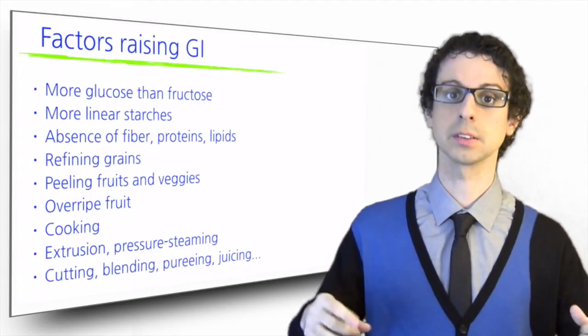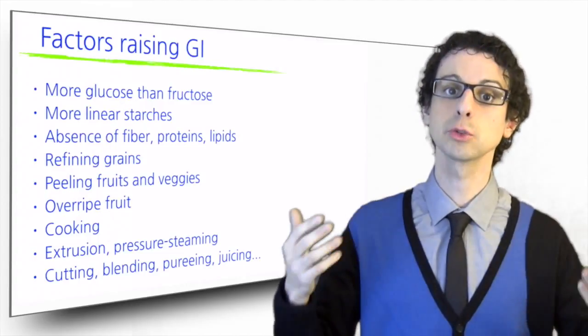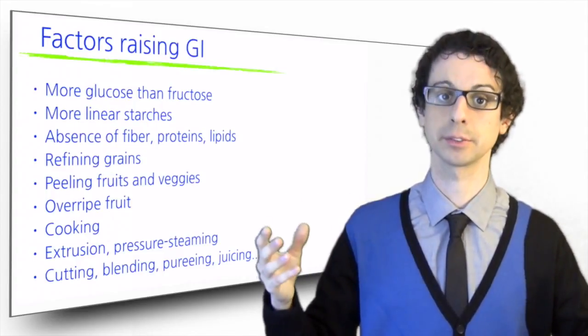Some technological processes also fragments starch, raising GI, such as extrusion to make potato chips or cornflakes, or pressure steaming to make puffed rice.